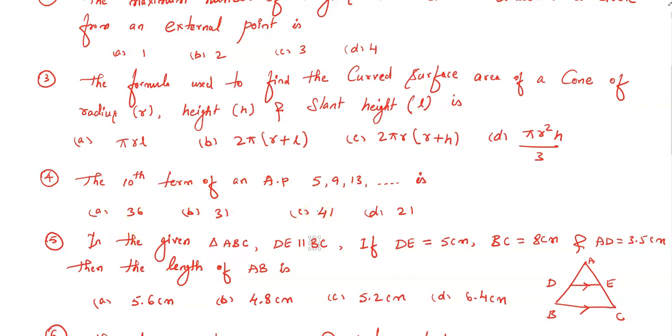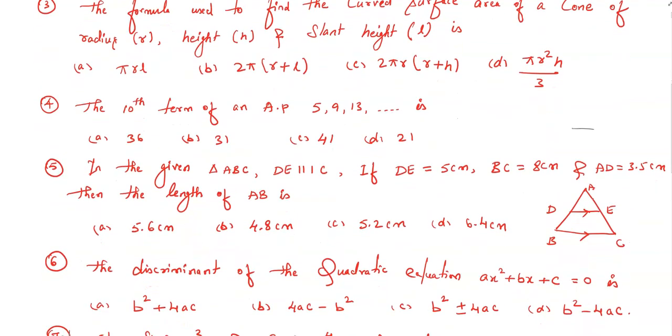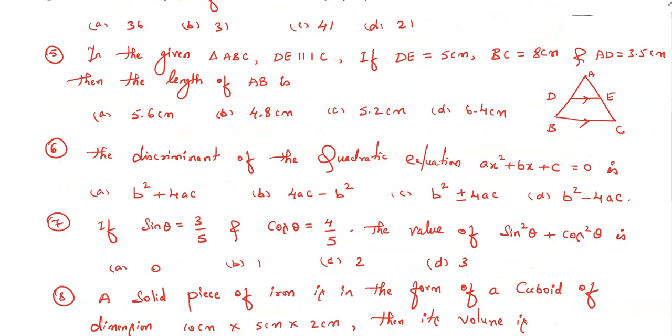Question number five: in the given triangle ABC, DE is parallel to BC. If DE equals 5 centimeter, BC equals 8 centimeter, and AD equals 3.5 centimeter, then the length of AB is—among these four options you need to select which is the correct option.